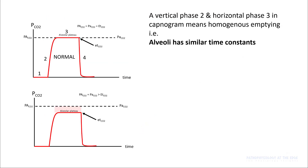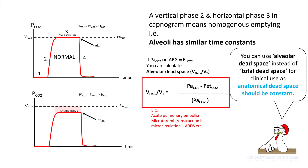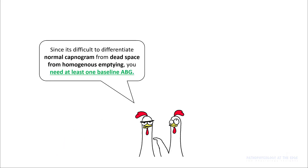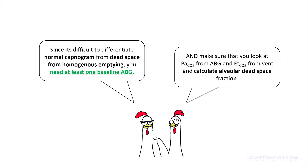You can figure out the amount of alveolar dead space by subtracting your end-tidal from arterial CO2, then dividing by PaCO2. You can use alveolar dead space in your calculation instead of total dead space, as your anatomical dead space should be constant. Calculating dead space can be trickier if you have a sloping waveform such as seen in obstructive diseases. You need at least one baseline ABG, and once you have that, look at the PaCO2 from the ABG and end-tidal from the vent, and calculate alveolar dead space fraction.